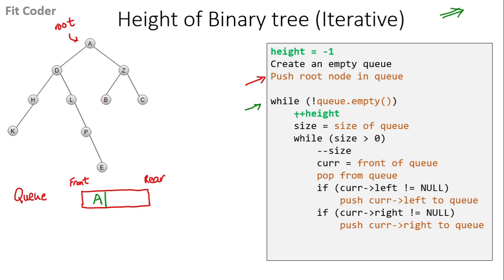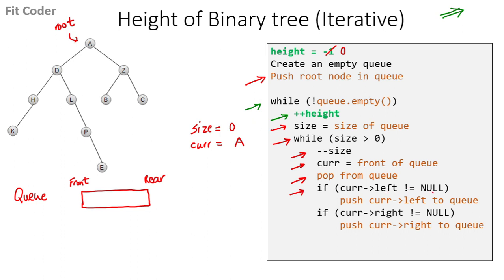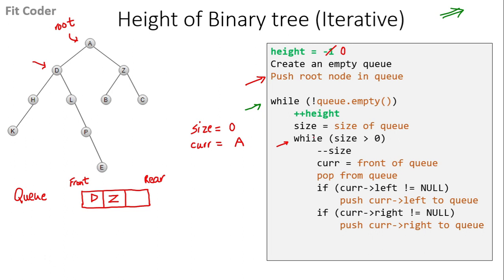We run a while loop until the queue is not empty. The queue has one element, so we enter and increment the height — height is now 0. We check the size of the queue, which is 1, and run an inner while loop while size is greater than 0. We decrement size to 0, set current to the front of the queue which is A, and pop A. We check if left of A is not null — left of A is D, so we push D. Right of A is Z, so we push Z. Size is now 0, so we exit the inner while loop.